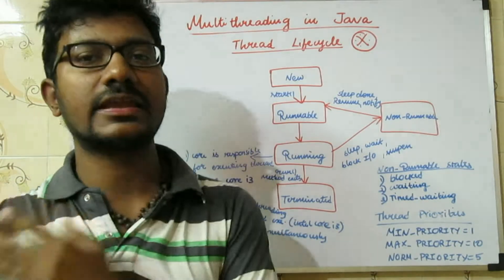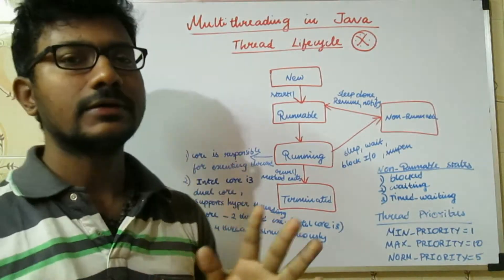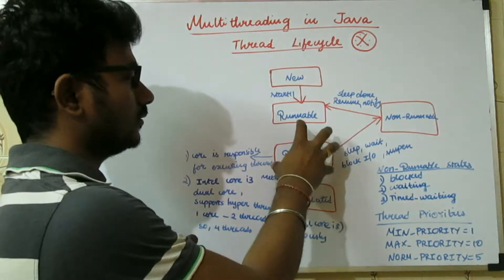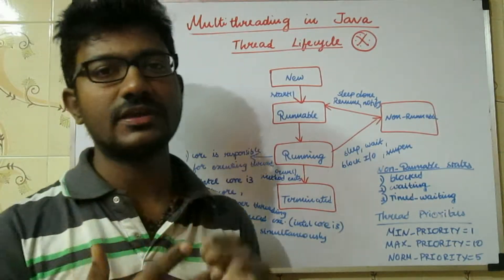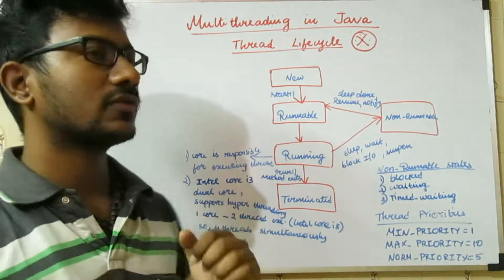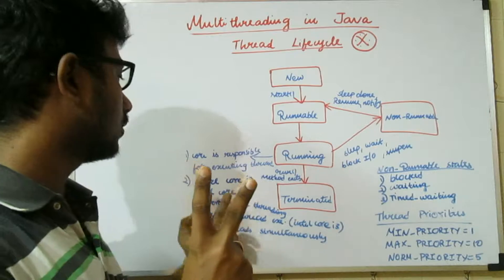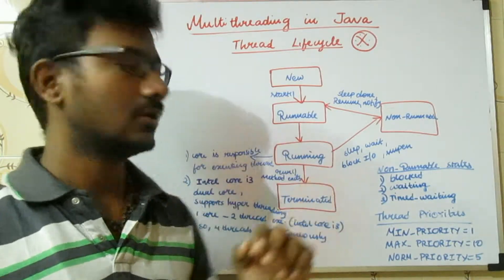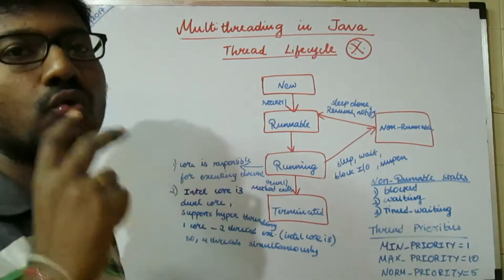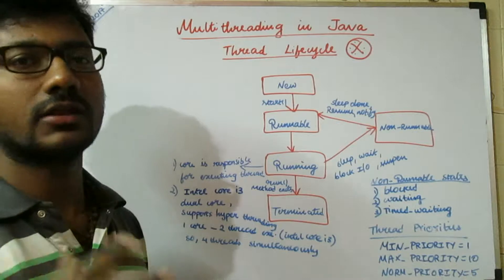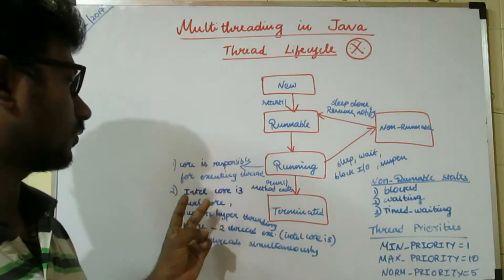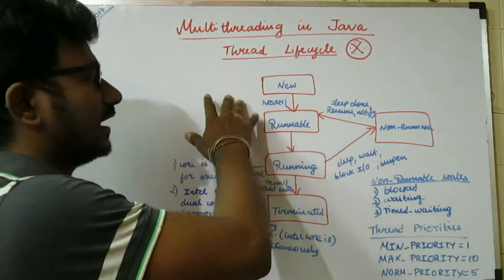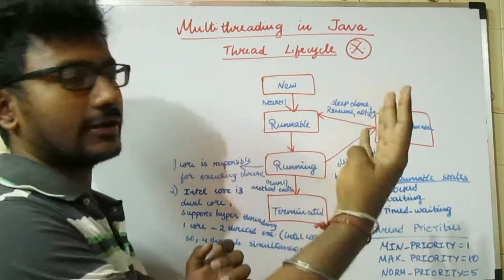Now we will compare this with technical details. In the New stage, N number of threads are created, and all those threads are eligible for running. The Running state is executed by the processor core. For example, if you have an Intel Core i3 processor, it has two cores — a dual core processor. Each core has hyper-threading capability, meaning it can execute two threads at a time. So with a dual core processor and hyper-threading, totally four threads can be executed simultaneously. So in our scenario with N number of threads, nearly four threads can be executed simultaneously, and the remaining threads are waiting in the thread pool, ready to get executed.